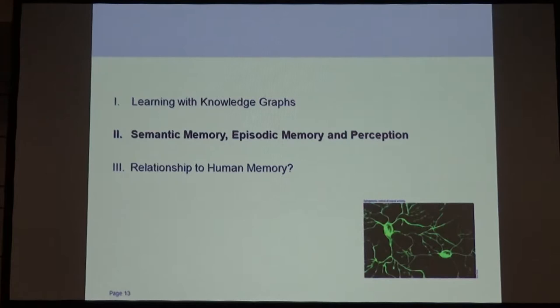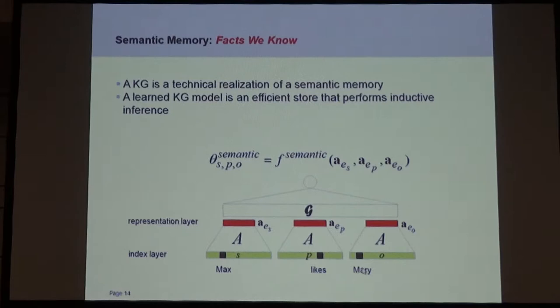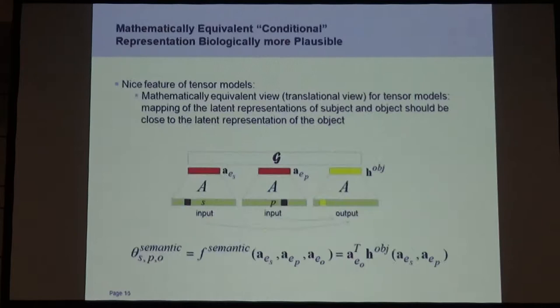Let's come to semantic memory, episodic memory, and perception. Semantic memory is a concept from cognition — it's about facts we know, like Obama is ex-president of the United States. We don't know where we learned it; we just know it's a fact. Our mathematical assumption is that the knowledge graph model is exactly that — it is a semantic memory. You have this index layer with one-hot encoding for Max, Likes, and Mary, calculate their latent representations, have this combination, and get the likelihood out for the triple to be true.